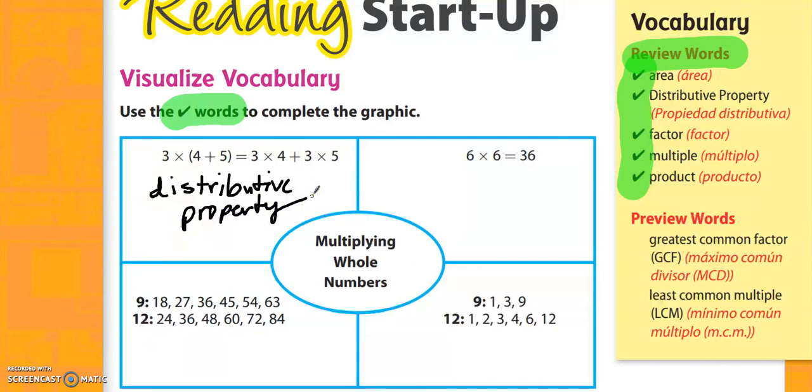Alright, so let's check out the lower left-hand corner. When we have 9, 18, 27, 36, that's counting by 9's. 12, 24, 36, 48, that's counting by 12's. Those are called the multiples.